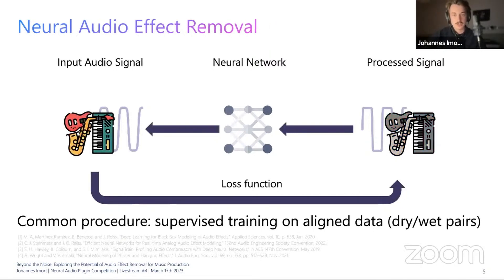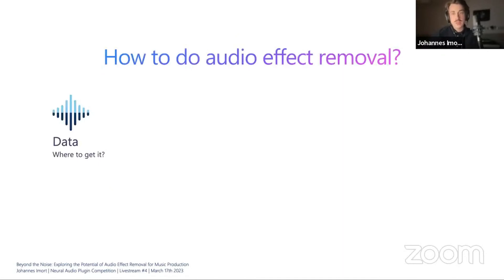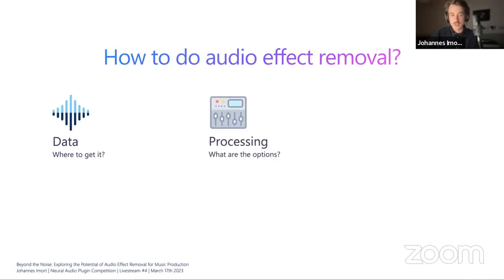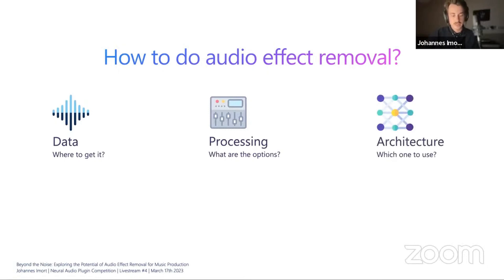In our work, we basically formulated the inverse task — we wanted to restore the original signal by training a neural network the other way around. The input of the system is the affected data and the output is dry, unaffected data. We can consider three important practical aspects when training an effect removal system in a supervised manner: first is data — where do we get it; second, after obtaining our dry data set, we want to process it with an audio effect we can choose; and finally, we need to select an architecture and training algorithm.